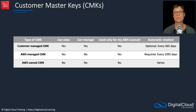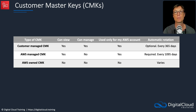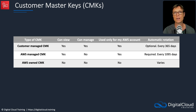Let's compare the different types of Customer Master Key — there are three. First, the customer managed CMK: you can view and manage them, they're used only in your account, and you can optionally enable rotation every 365 days. The AWS managed CMK is viewable but you can't manage it; it's only used for your account, and automatic rotation is required every 1095 days. Lastly, there are AWS owned CMKs — you don't see these, you don't manage them, and they're used across different accounts. These are not really a concern for the exam; the key things to understand are the differences between customer managed and AWS managed CMKs.